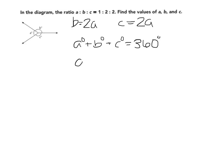So I have A plus B, and I can replace that with this 2A because B equals 2A. And I can replace C also with 2A and add these all up to equal 360 degrees. So A plus 2A plus 2A gives me a total of 5A, which equals 360 degrees.